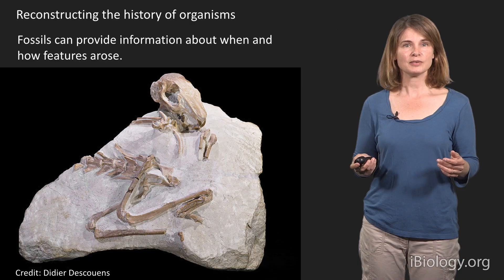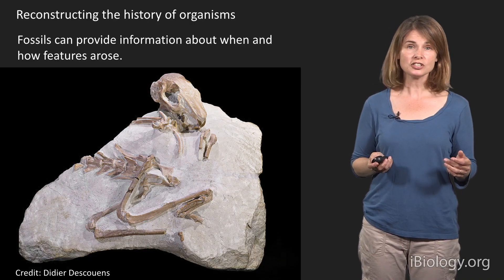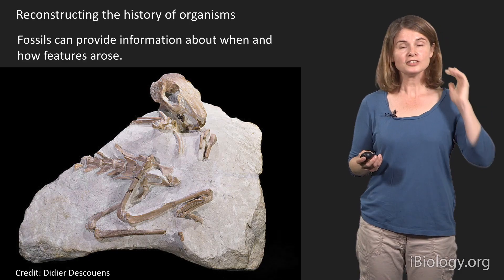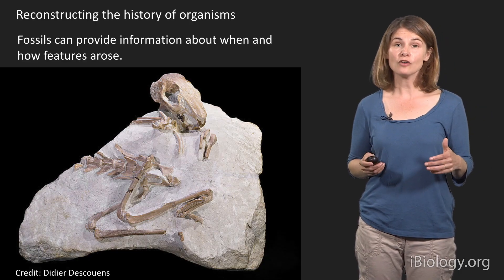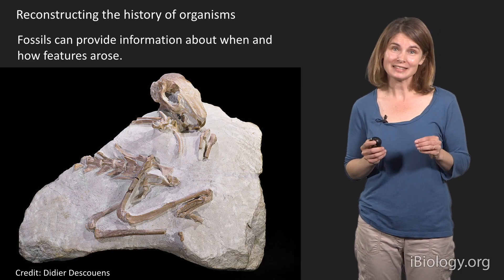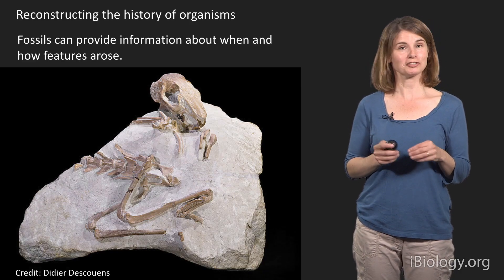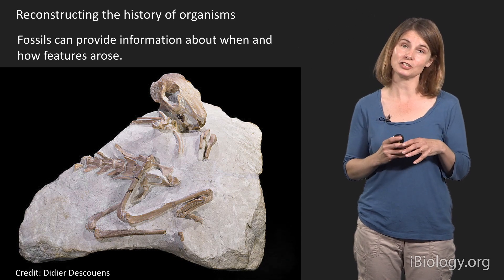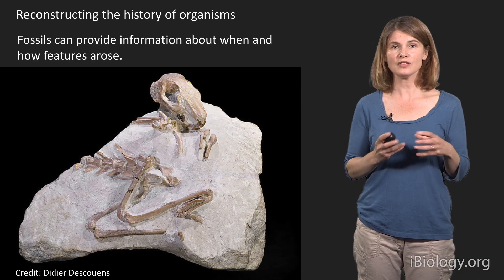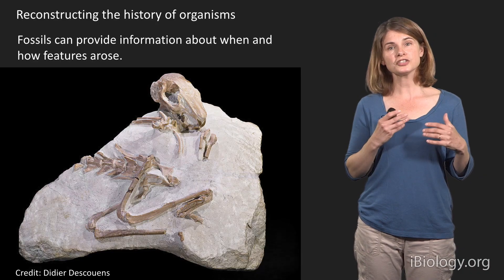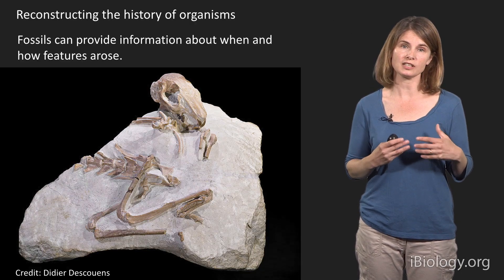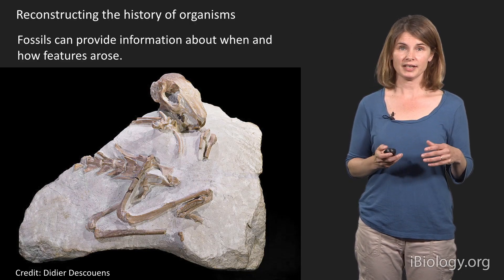Another set of data useful in understanding evolutionary history is, of course, fossils, which are really important. Fossils provide information about when and how features arose. They won't provide a common ancestor — it's very unlikely to actually dig up a fossil that gives you the exact common ancestor of species — but nevertheless, they can ground our understanding of when an organism or particular characteristics of an organism arose, which is incredibly important.